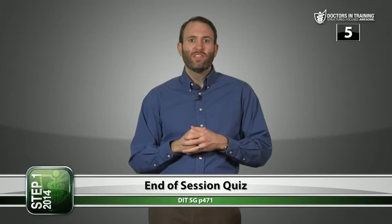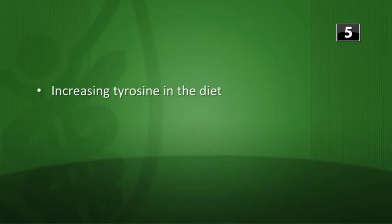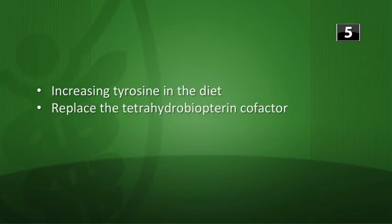Next: a patient with PKU should have a diet low in phenylalanine — what other dietary modifications should they make? First, increase tyrosine in the diet because it's now essential. You may also potentially need to replace the tetrahydrobiopterin cofactor, depending on the type of PKU.